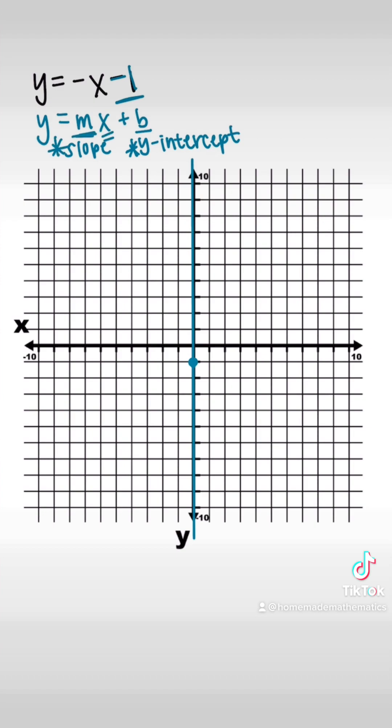Then I can use my slope to find my next points, which is our number in front of x, which if there's not a number there it's really an imaginary one. So negative one over one, and so we're going to rise negative one, so go down one, and we're going to run to the right one.